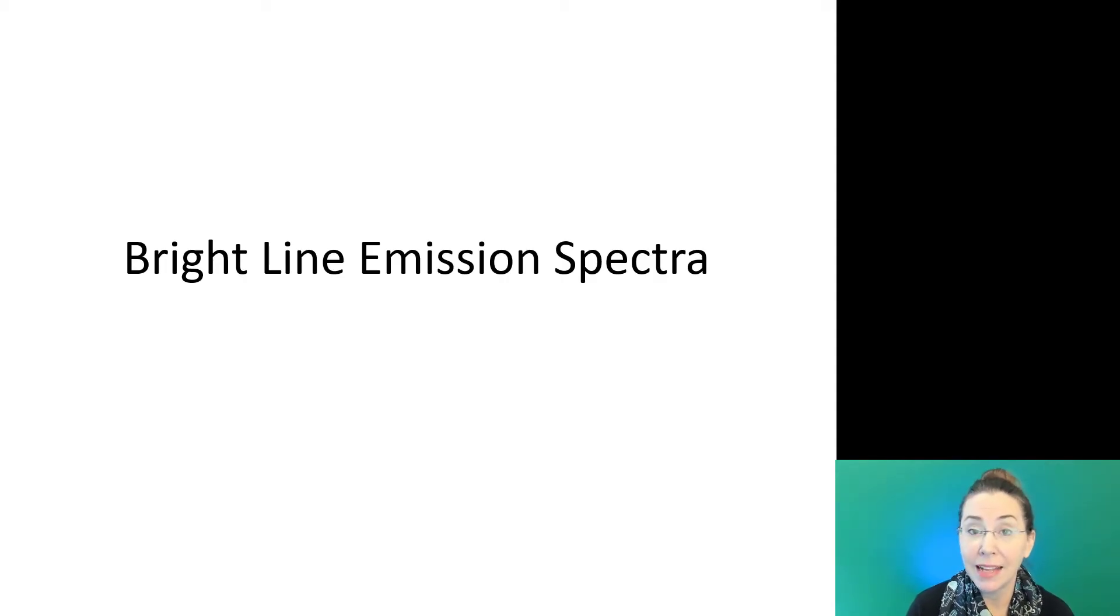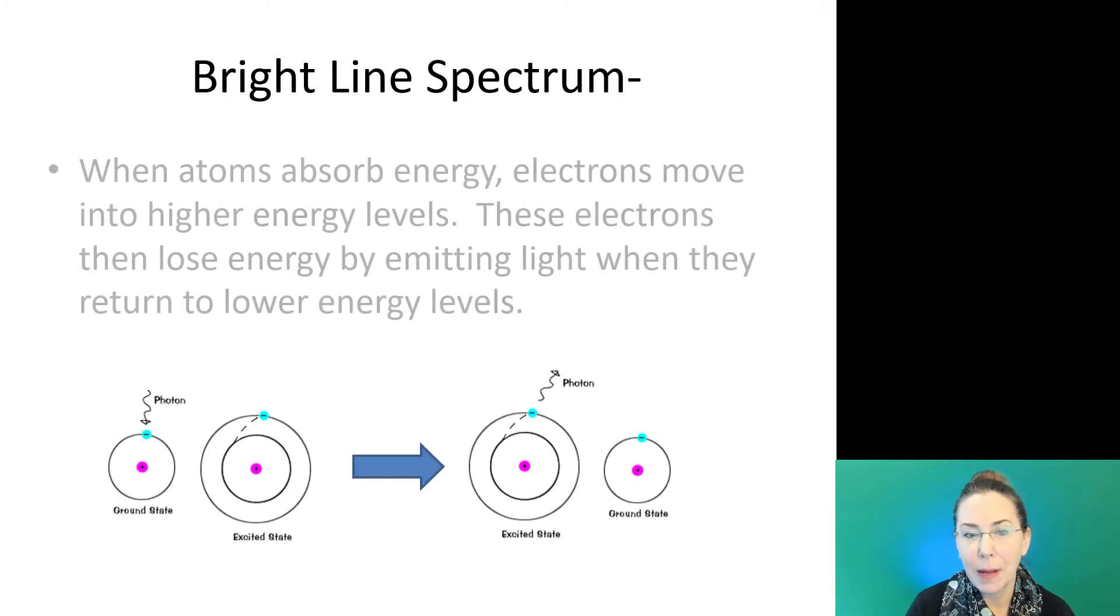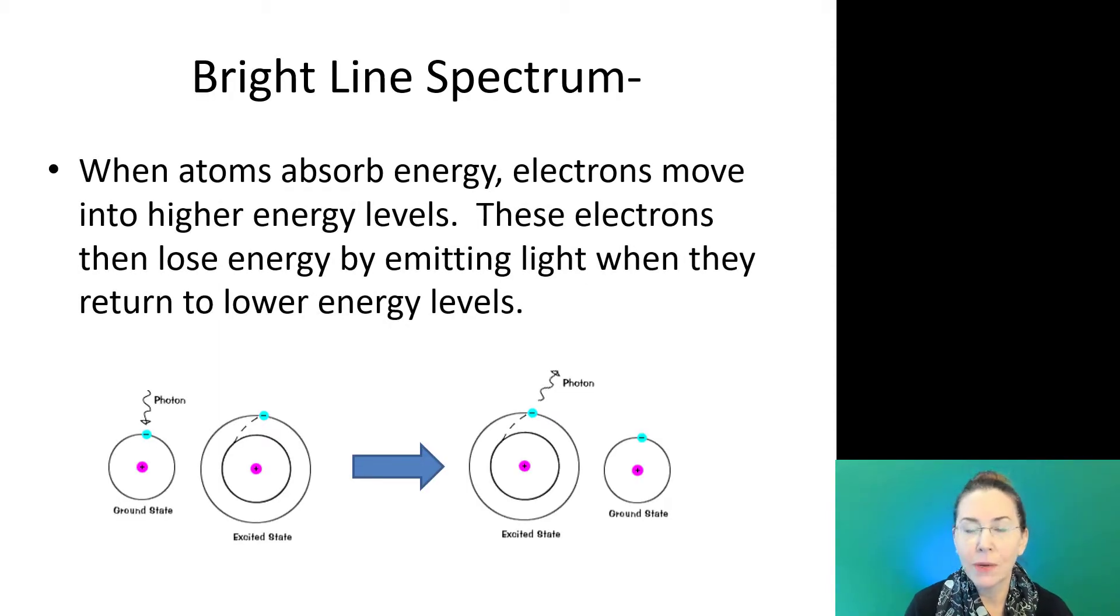Let's talk about bright line emission spectra. A bright line spectrum is formed when atoms absorb energy and their electrons move into higher energy levels. These electrons become very unstable, they can't stay that way, and so they then lose this energy by emitting light when they return back down to their lower energy levels.